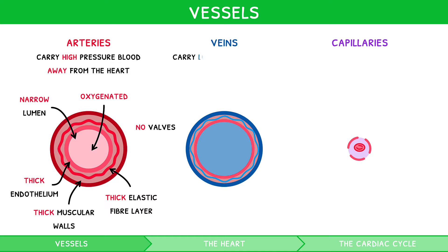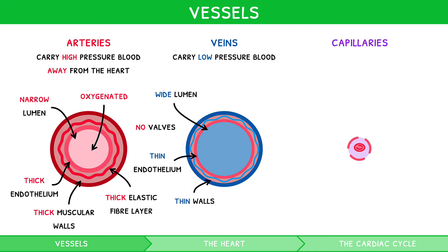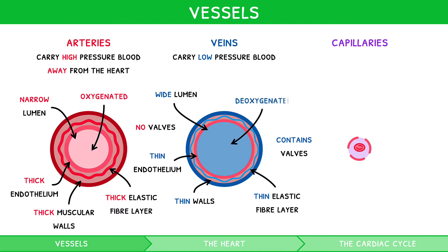Veins carry blood at low pressure due to their wide lumen. They have thinner endothelium and thinner walls with a thin elastic fibre layer. They have valves to prevent backflow due to the low pressure. And generally, they carry deoxygenated blood towards the heart, away from tissues.